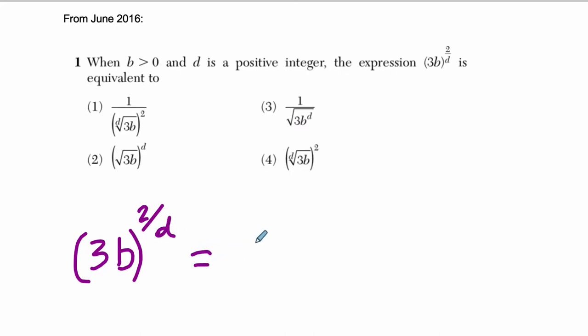Well, there's a couple ways to interpret it. First, I'm going to think of it as 3b to the second power and that whole thing to the 1 over d. And that's equivalent because 2 times 1 over d is 2 over d. These are equivalent things.